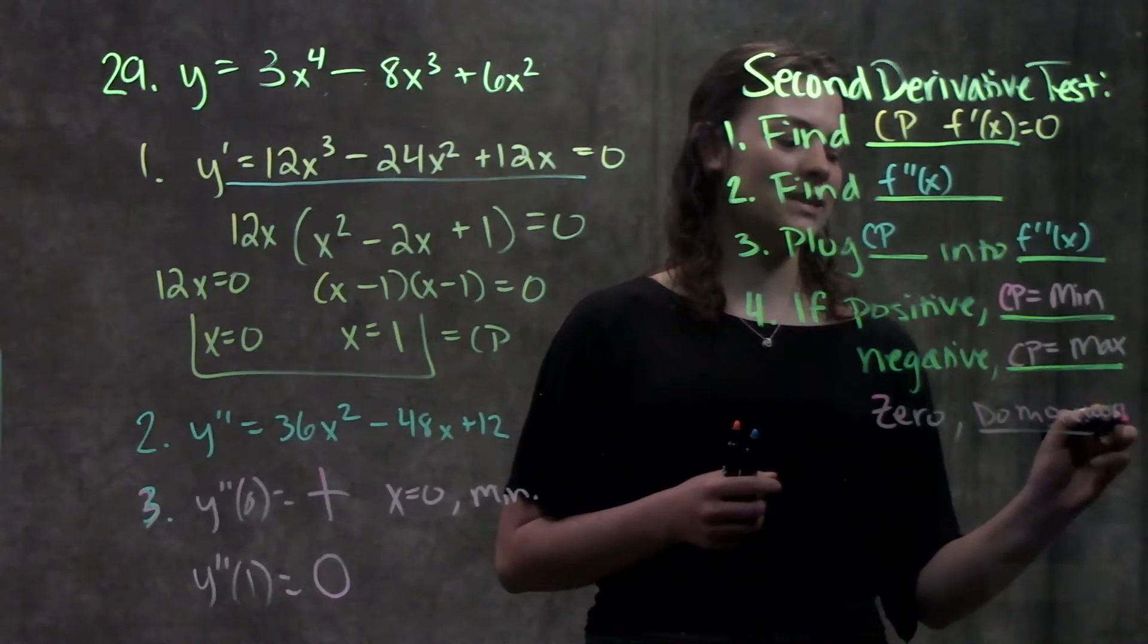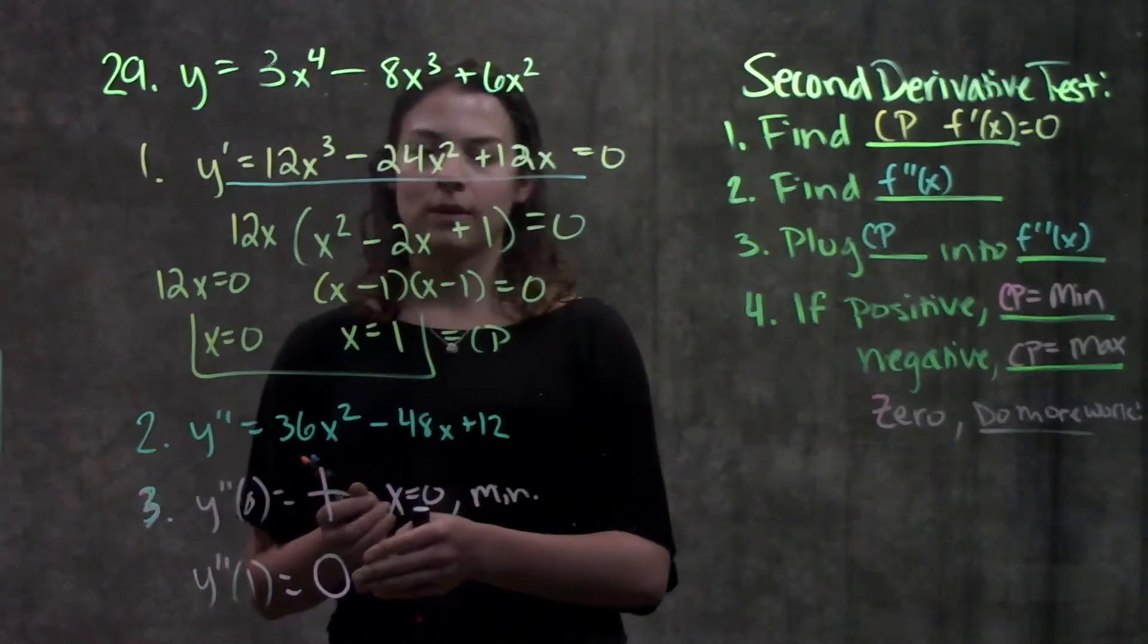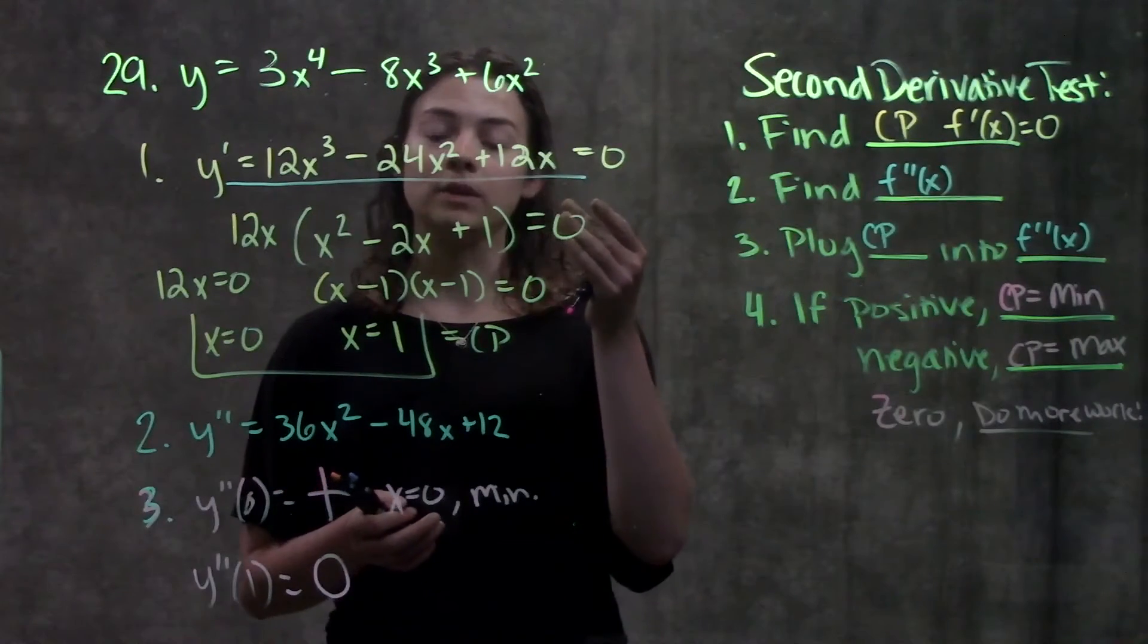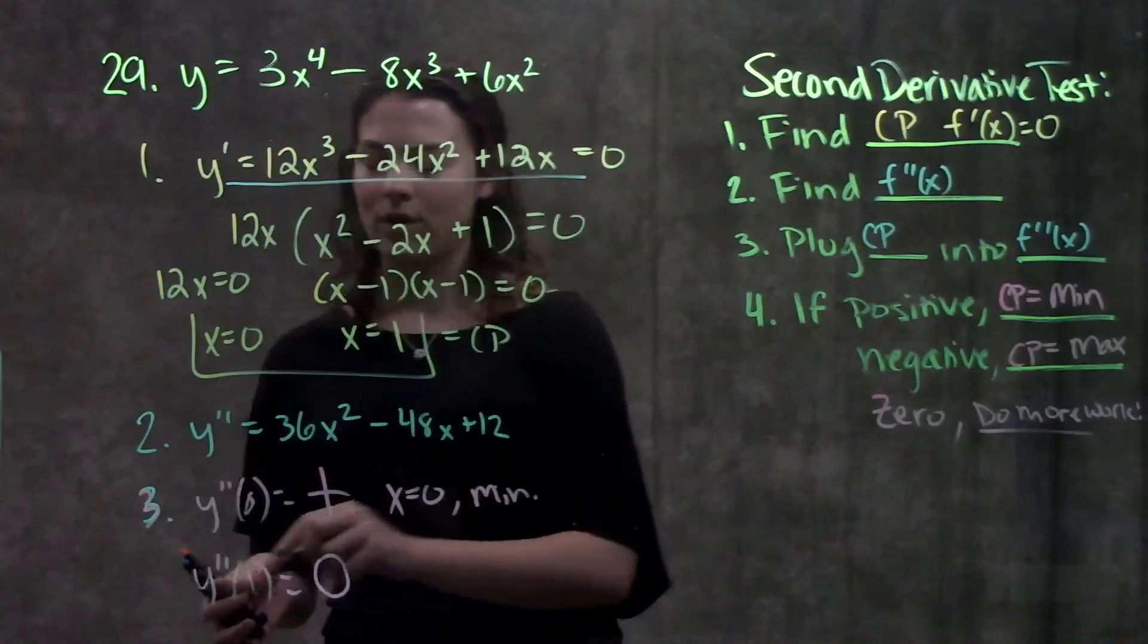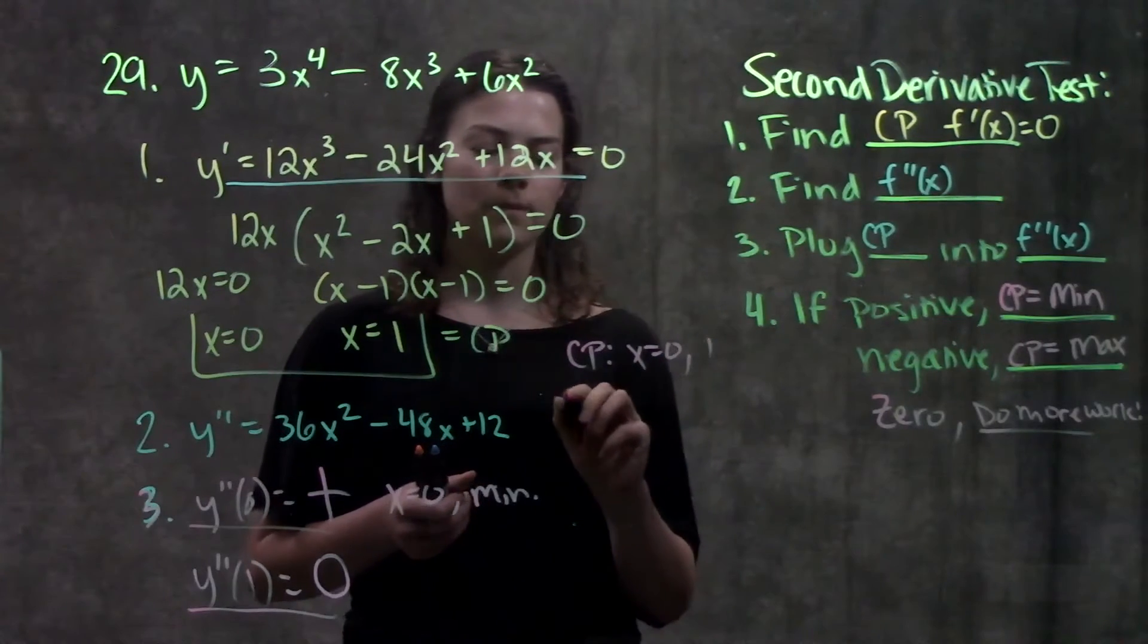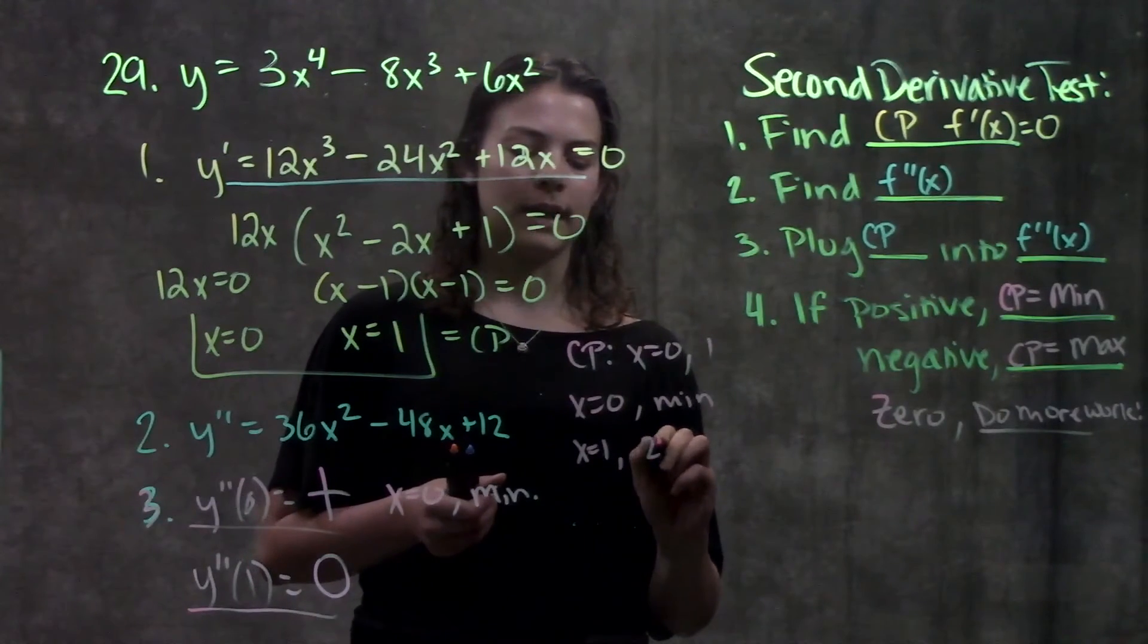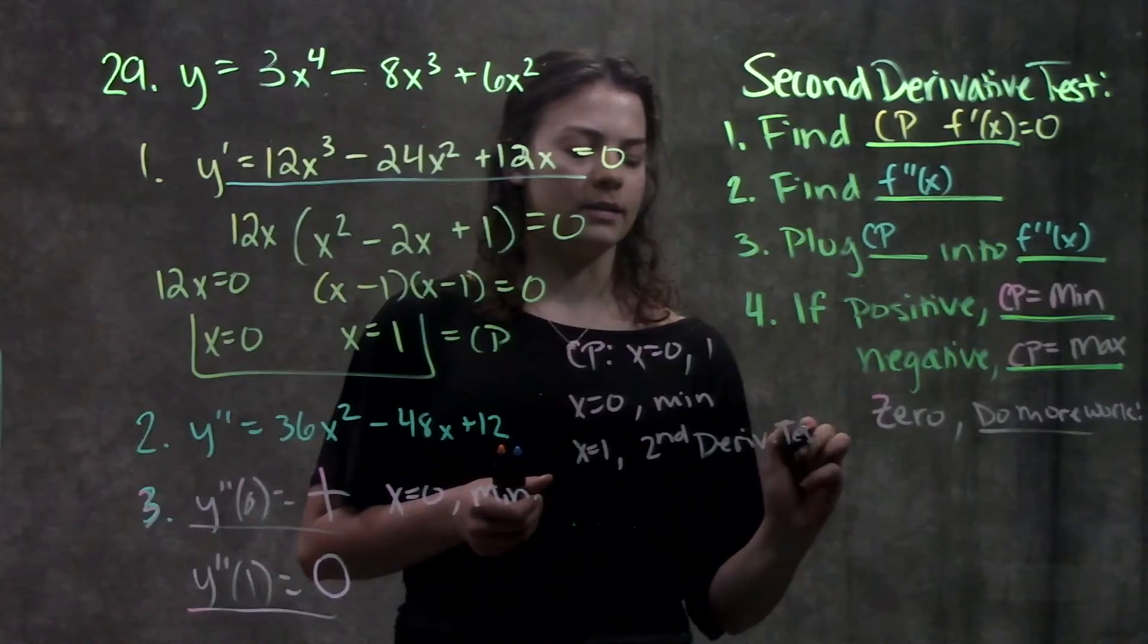That means that this test was inconclusive for this critical point. We'll need to determine whether this is a min or max another way. Possibly by going back to the first derivative and checking our signs on those intervals. We're not going to go through that here, though. We're just going to say that our final answer is that our critical points are at x equals zero and one. And zero is a minimum. And at x equals one, the second derivative test fails.